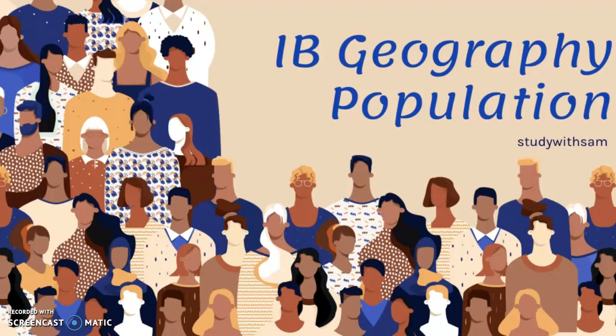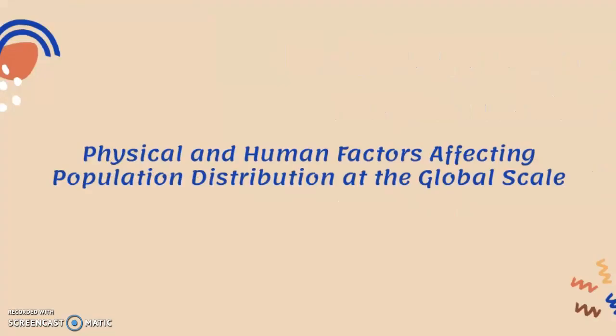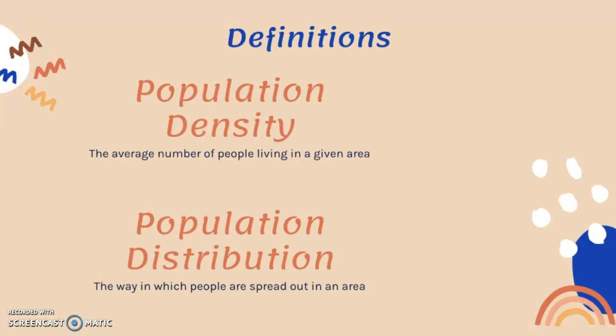This video is about the physical and human factors affecting population distribution at the global scale. First, the definitions: population density is the average number of people living in a given area, and population distribution is the way in which people are spread out in an area. These are crucial definitions for the population topic and what we're about to discuss.